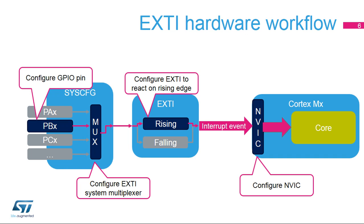This slide describes the EXTI hardware workflow. To initialize a GPIO to generate an interrupt to wake up the processor from sleep mode, for example, four main blocks need to be configured. First of all, the GPIOs need to be configured in input mode. As a second step, in the system configuration controller, the GPIO pin needs to be connected as an input to the EXTI controller line. The connection of the GPIO pin to the EXTI line is selected through the EXTI system multiplexer.